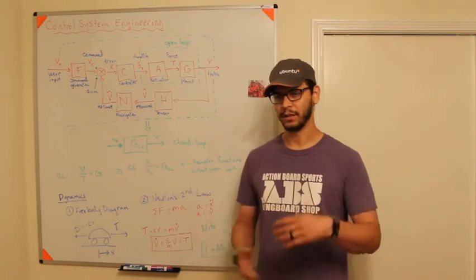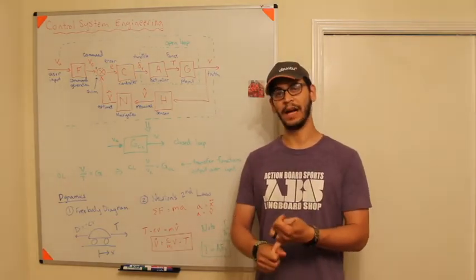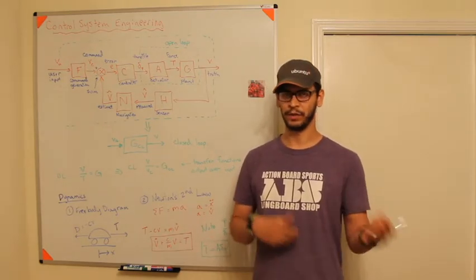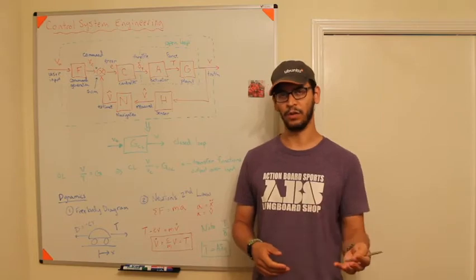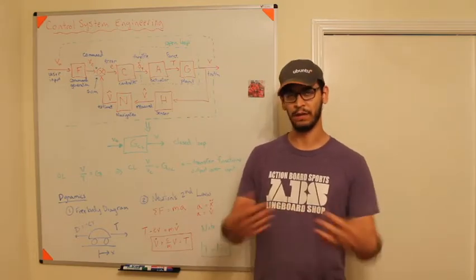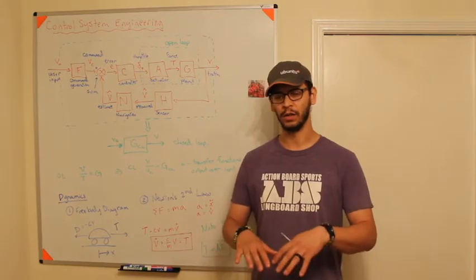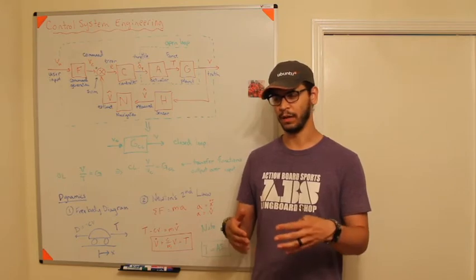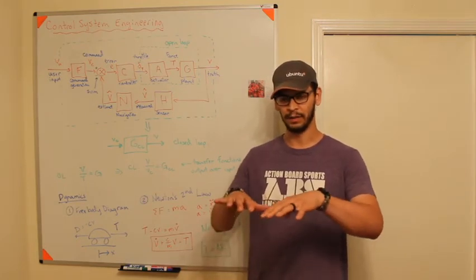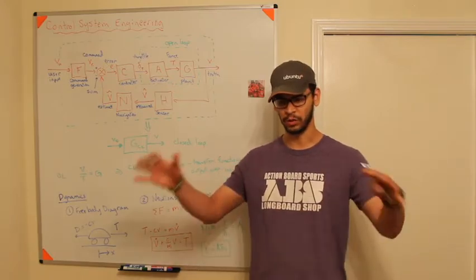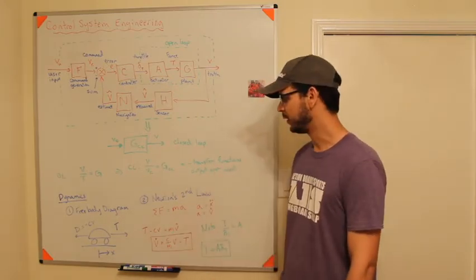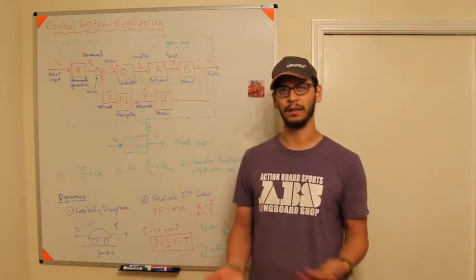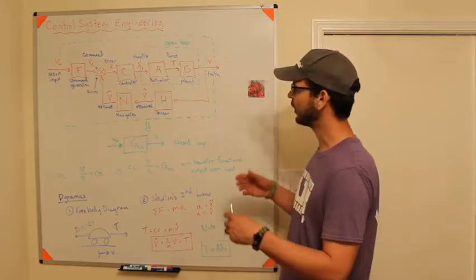When you think of control systems engineering, there are a couple of different things. There's engineering — you have to design and build something. Then there is the control system, which has two words: 'control,' meaning telling something what to do, and 'system,' meaning you are developing a set of actions to have something do something. The whole system is what you are controlling.